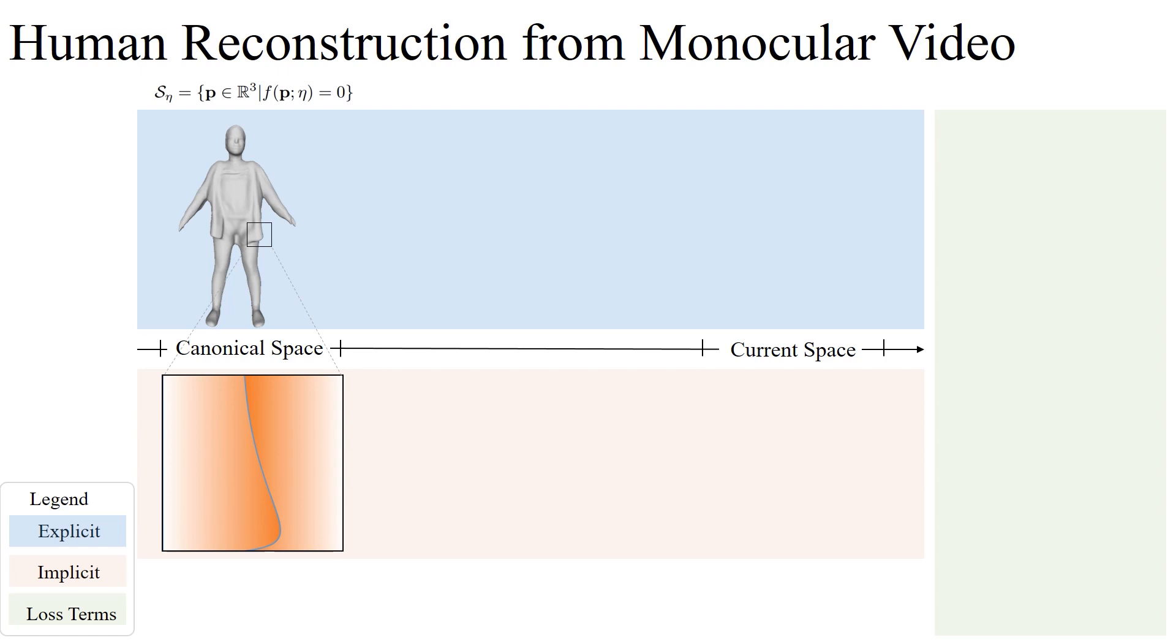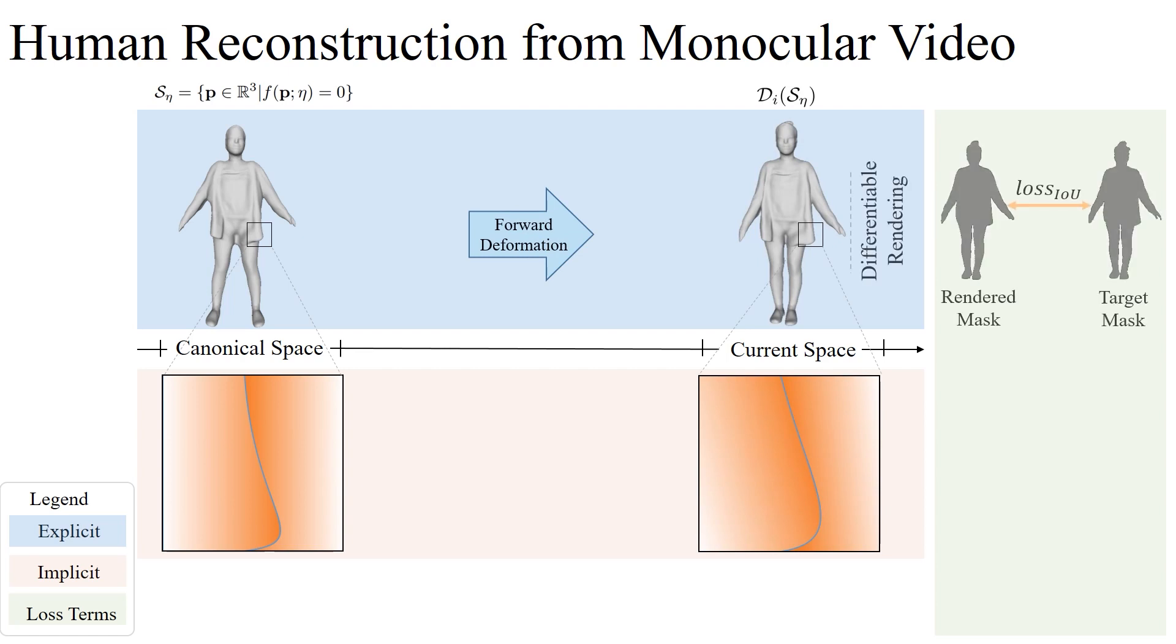To generate spacetime coherent meshes for the sequence, we utilize the forward deformation field to transfer geometry to the current space. Then a differentiable mask loss is used on the explicit mesh to hold the overall shape.